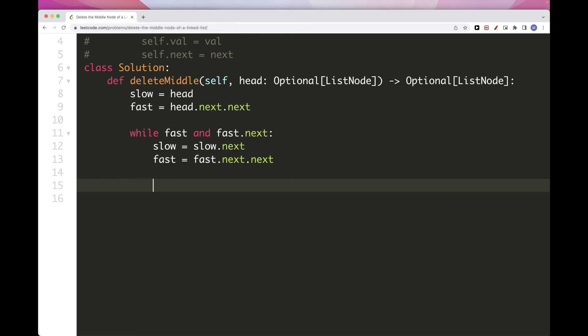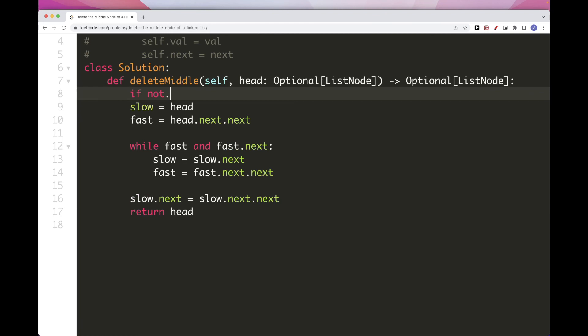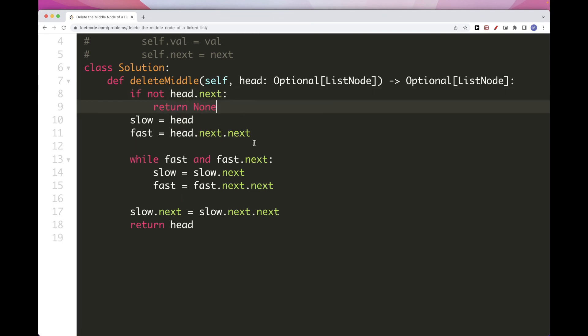And once we reach here, slow is just at the node before the middle, so we can just make its next pointer point to the node after the middle. That way we remove the middle. And then just return the original head. Now, if not head dot next, because this will fail, we want to return none.